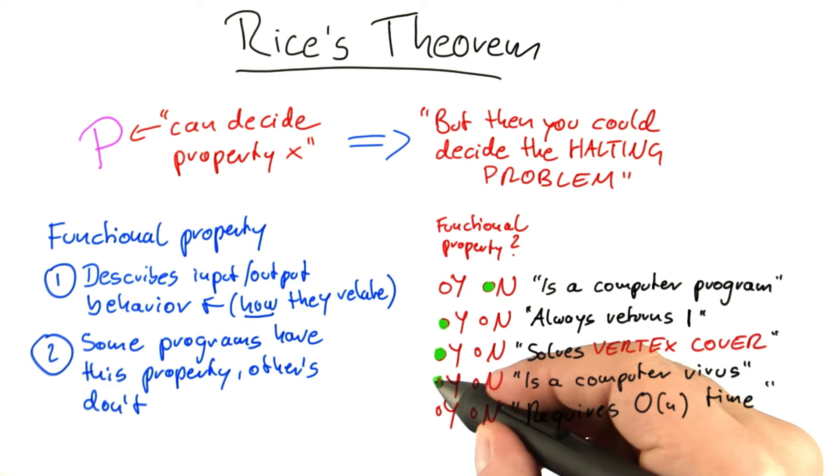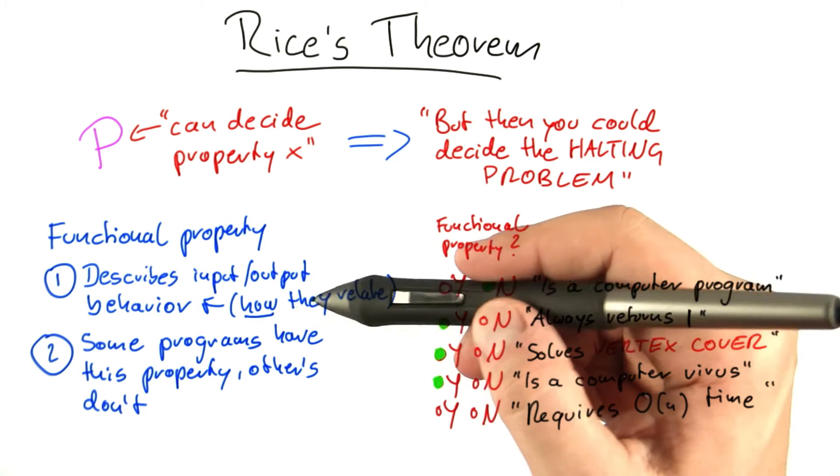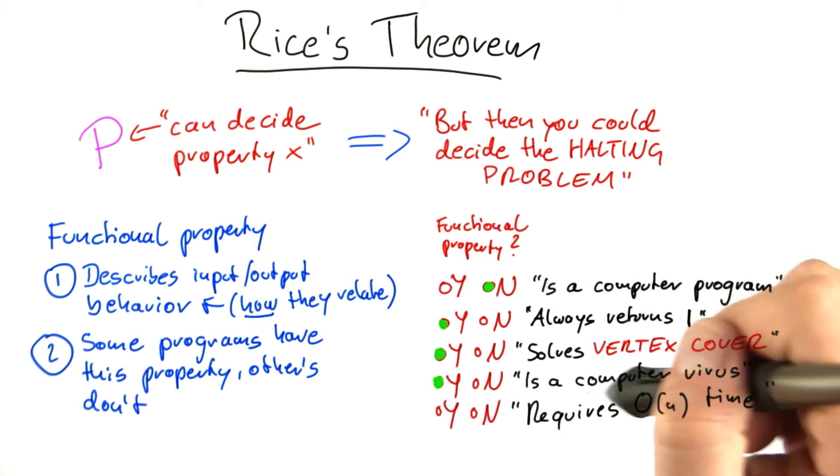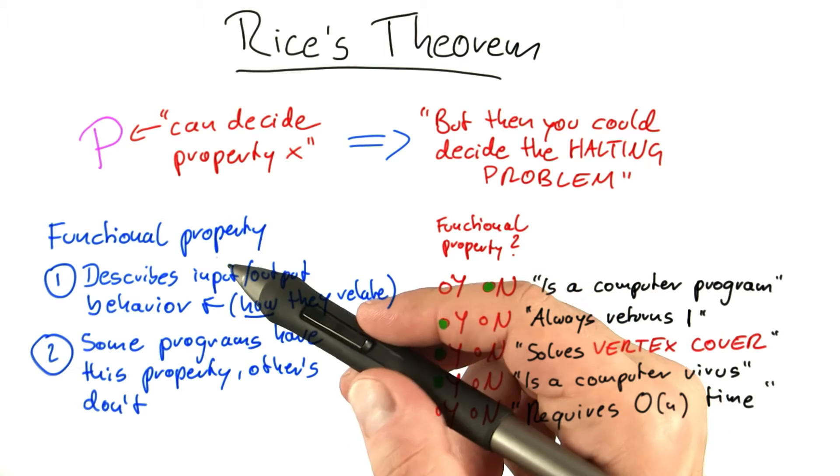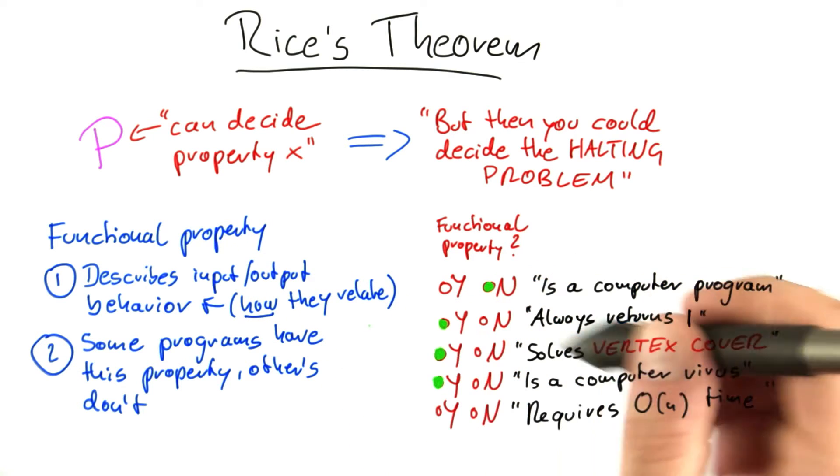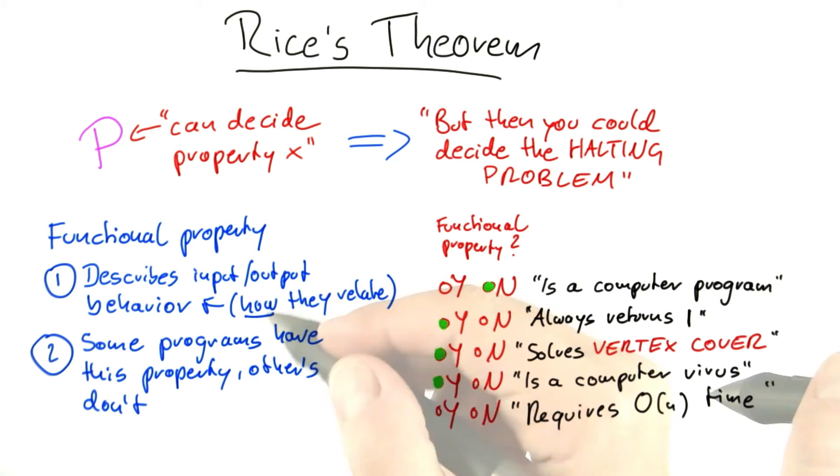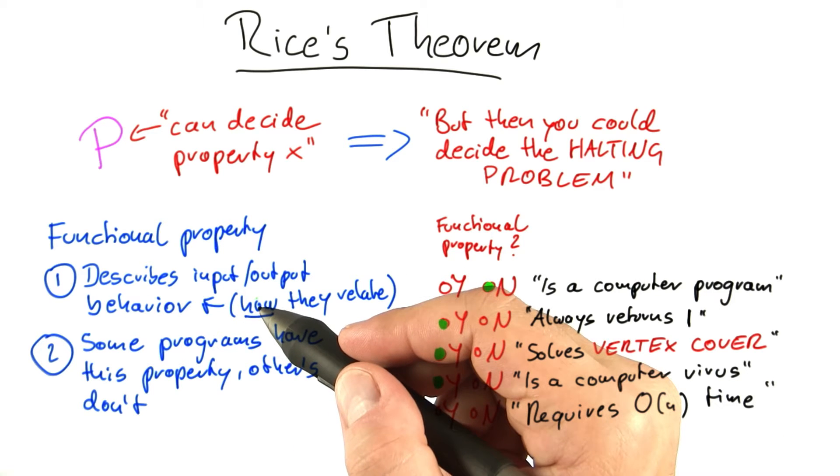Is a computer a virus? I would say yes, this is a functional property. It is a bit debatable if saying it is a computer virus already describes sufficiently how the output relates to the input. But I would say that probably any definition of a computer virus would in some way describe what the computer virus is doing.